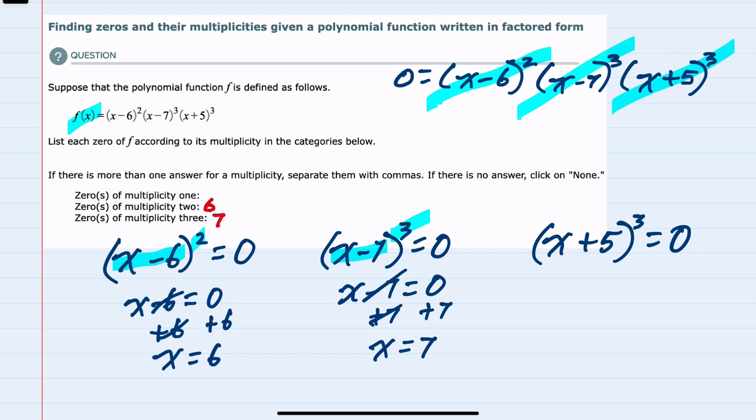For the last piece, x plus 5 cubed equals zero. Just as in the previous one, this means that the x plus 5 must be zero. Solving for x, x equals negative 5.